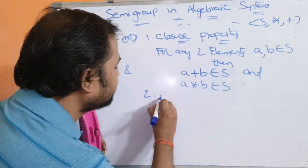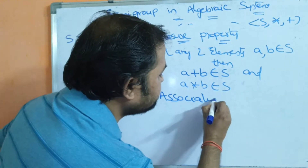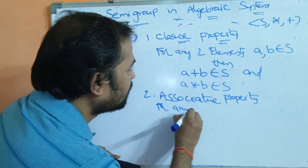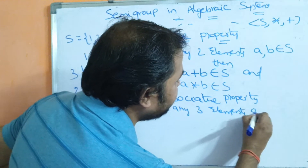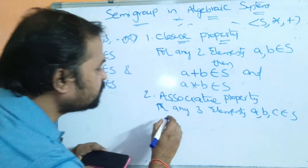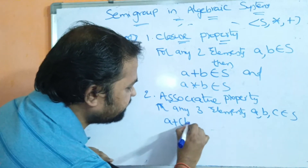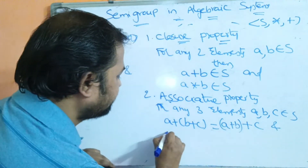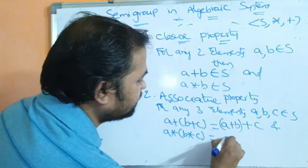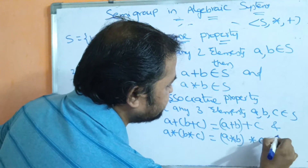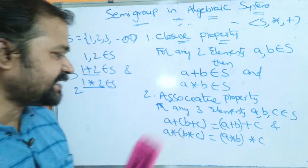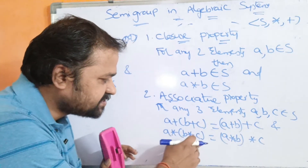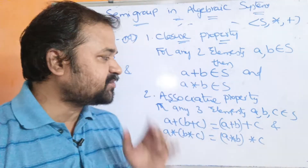The second property is associative property. Associative property means we have to take three elements from the set. For any three elements A, B, C belonging to S, if A plus (B plus C) equals (A plus B) plus C, and A star (B star C) equals (A star B) star C, then if LHS equals RHS, we can say that associative property is satisfied.